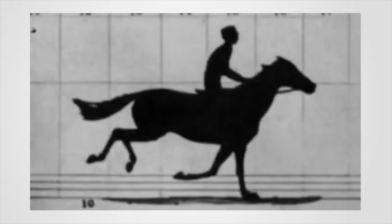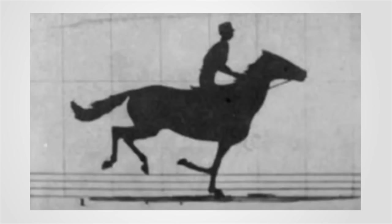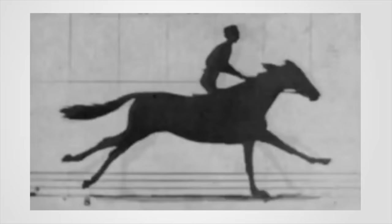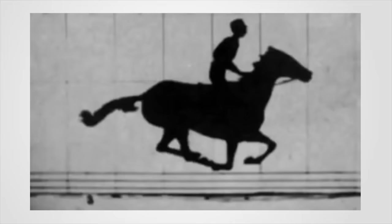If you understand how this works in a photograph, you understand how it works for video, because a video is nothing more than a series of photographs over a period of time. When we talk about a video being 30 frames per second, that means for every second of video there are 30 photographs — 30 frames. We're just doing this very, very fast. So you can use an ND filter shooting videos the same way you do making a photograph.